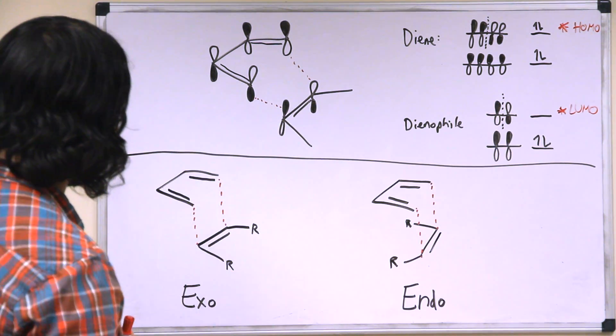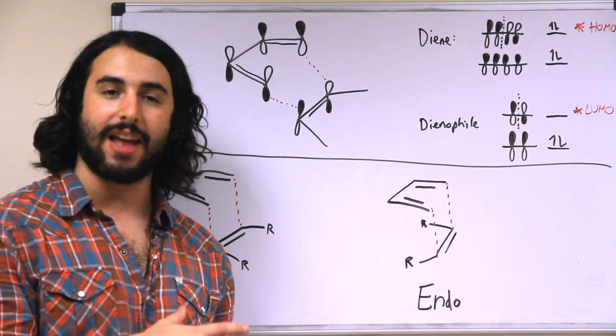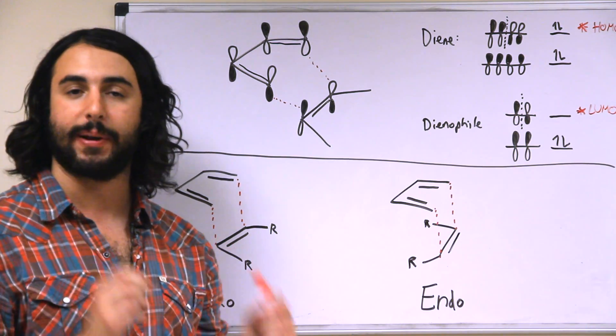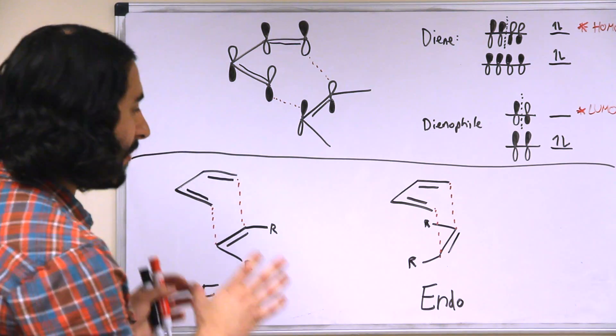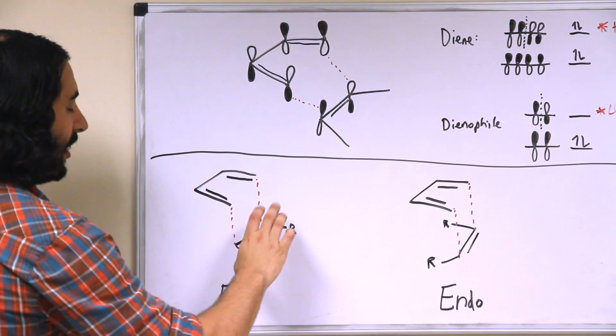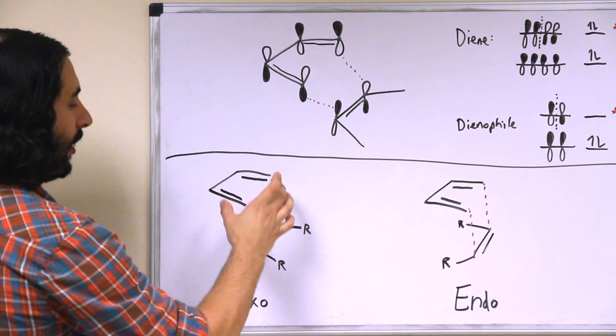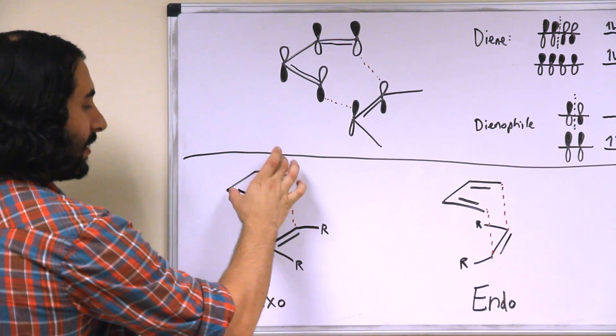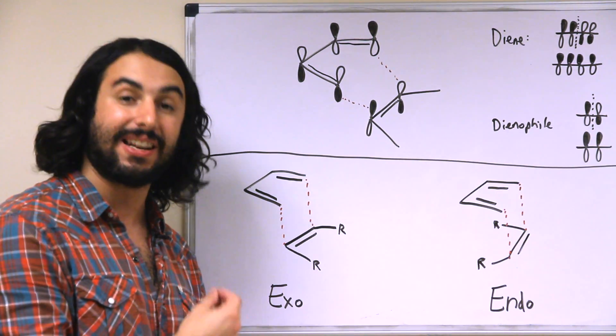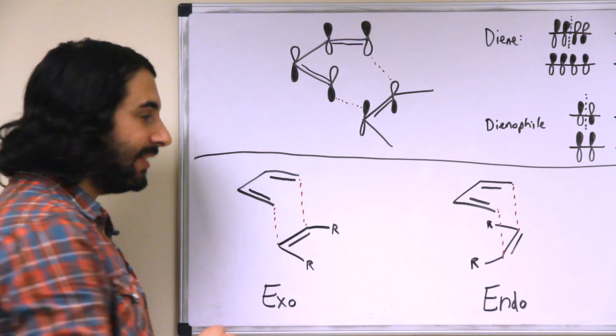Now there's one other point that we want to discuss. The diene can approach the dienophile in either exo or endo fashion. And so that's not necessarily implying exothermic or endothermic. They're just terms that are describing the geometry of what's going on here. So it is an exo Diels-Alder reaction if any groups projecting from the dienophile are extended away from the diene. So this is going to lower down and this is probably more sterically favorable. There's not as much steric hindrance associated with an exo Diels-Alder reaction.